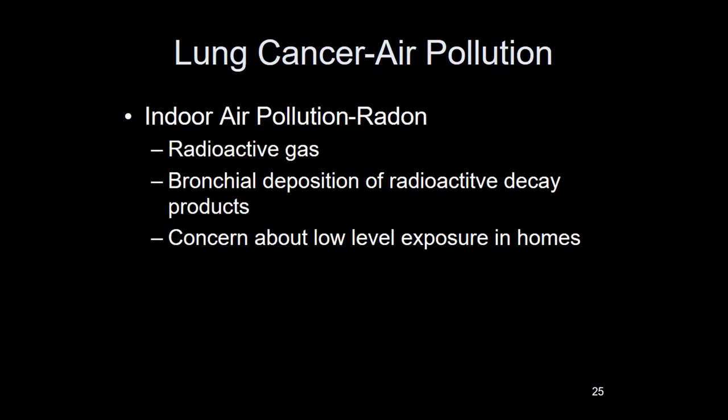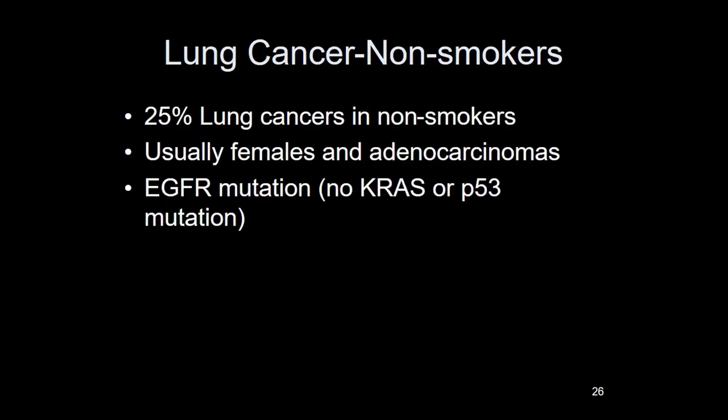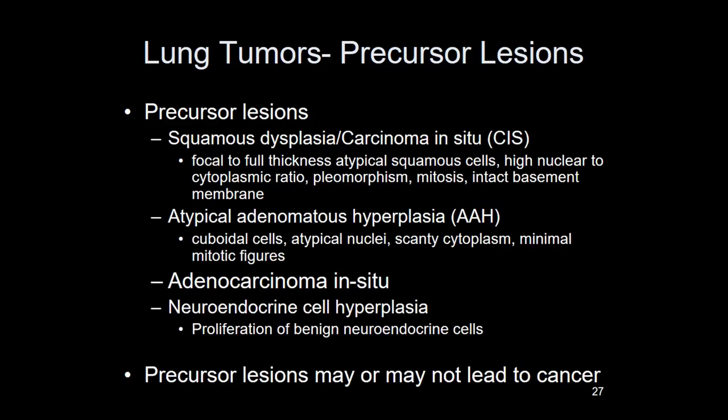About 25% of lung cancers are in non-smokers — usually females with adenocarcinomas. These patients usually have EGFR mutations. A classic board scenario: Asian female, non-smoker, lung cancer — what molecular testing do you want? Think EGFR, and treatment with EGFR tyrosine kinase inhibitors like erlotinib. Know that non-smokers get adenocarcinomas and carcinoid tumors, and that molecular mutations are key.